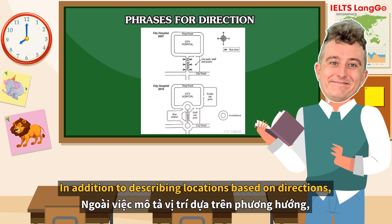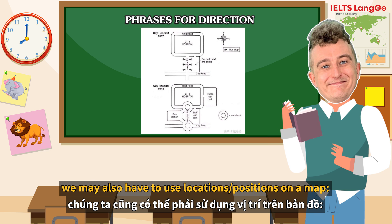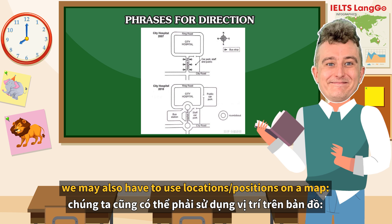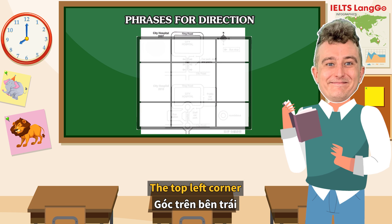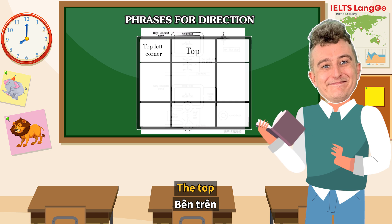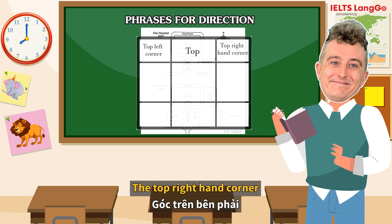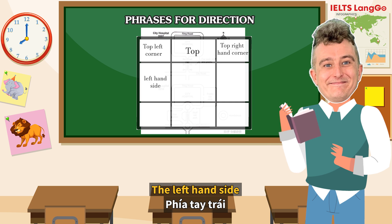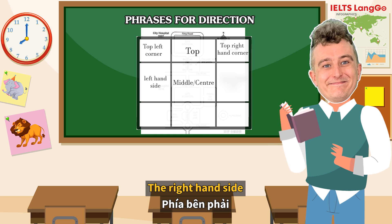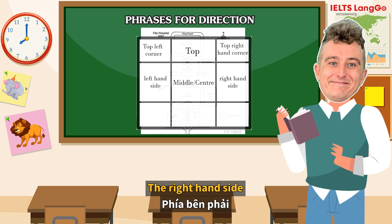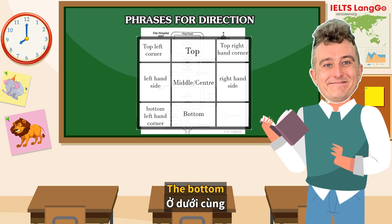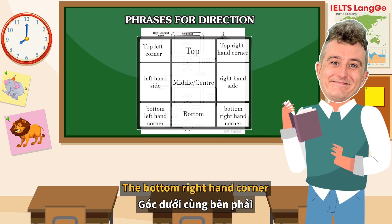In addition to describing locations based on directions, we may also have to use locations or positions on a map: the top left corner, the top, the top right hand corner, the left hand side, the middle or the centre, the right hand side, the bottom left hand corner, the bottom, and the bottom right hand corner.